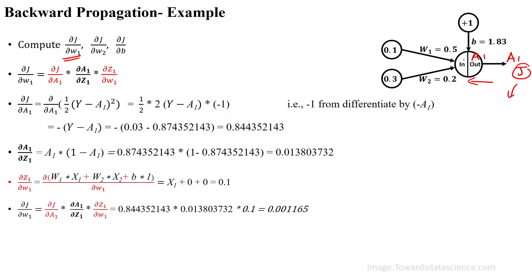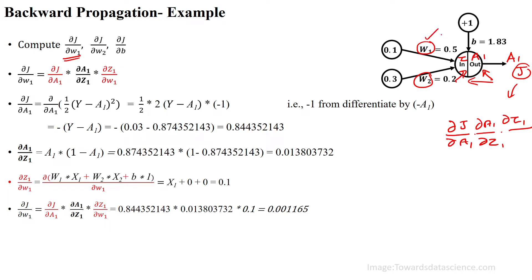Going backward: we use the chain rule — ∂J/∂A1, then the next term ∂A1/∂G1, then ∂G1/∂W1. G1 depends on W1. So the full expression for ∂J/∂W1 is written using these three chained terms.